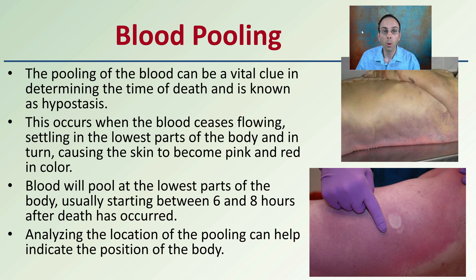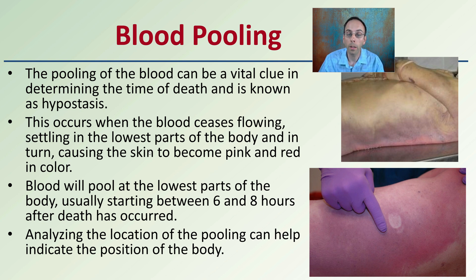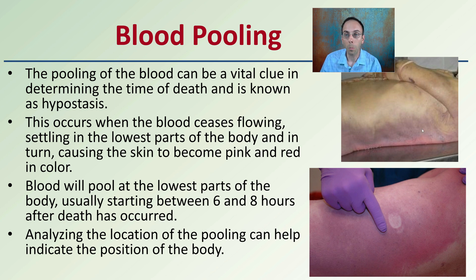We also have blood pooling, known as hypostasis. The pooling of blood can be a vital clue in determining the time of death. This occurs when the blood ceases flowing, settling in the lowest parts of the body and causing the skin to become pink and red in color. Blood will pool at the lowest parts of the body, usually starting between six to eight hours after death. Analyzing the location of the pooling can help indicate the position of the body, and applying pressure to that region — observing whether the coloration changes or how quickly it returns — can also help estimate the time of death. In the upper image, we see blood pooling on the back, indicating this person was in the supine position when they died. All these are contributing factors to help pinpoint when the time of death originally occurred.